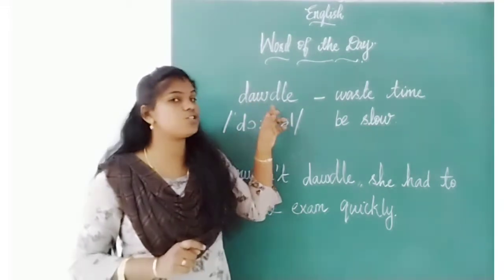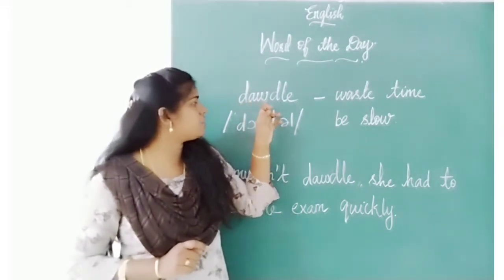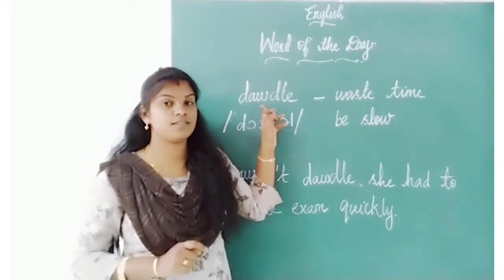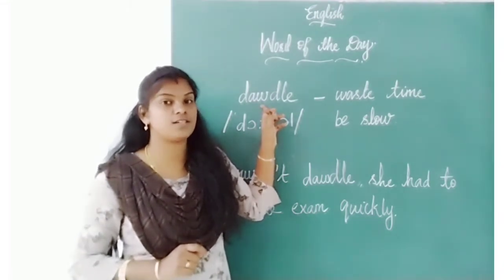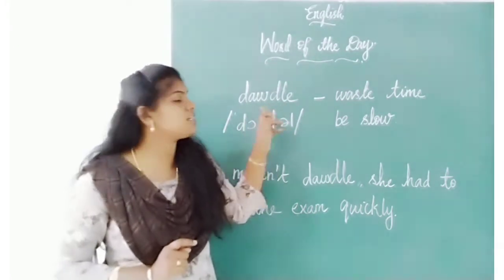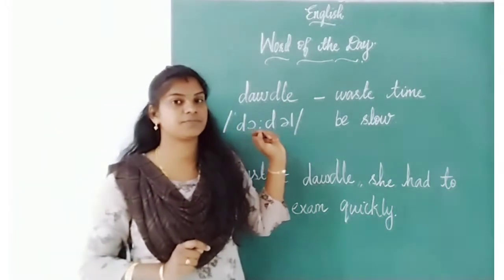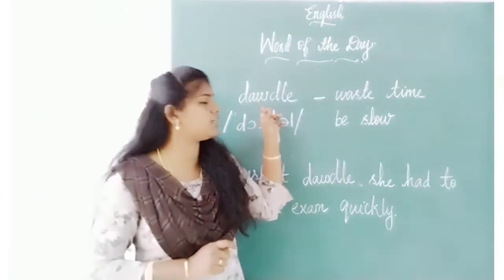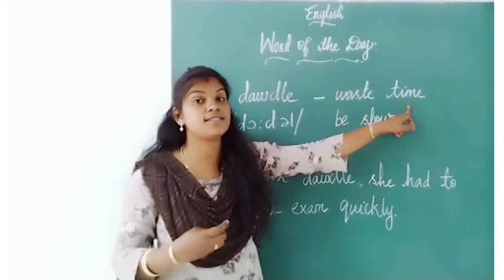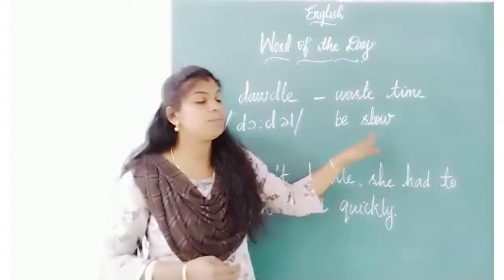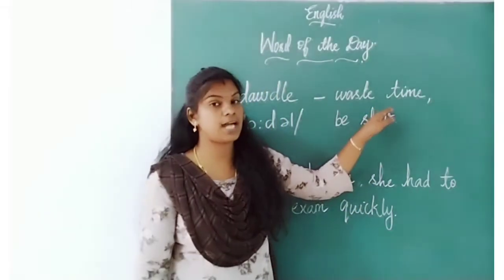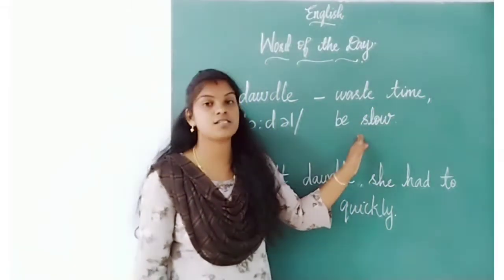Say 'dawdle' — D-A-W-D-L-E — dawdle. Say it louder: dawdle. Once again: dawdle. What is the meaning of 'dawdle'? Waste time. Wasting time, and be slow. Two meanings: waste time, or be slow.